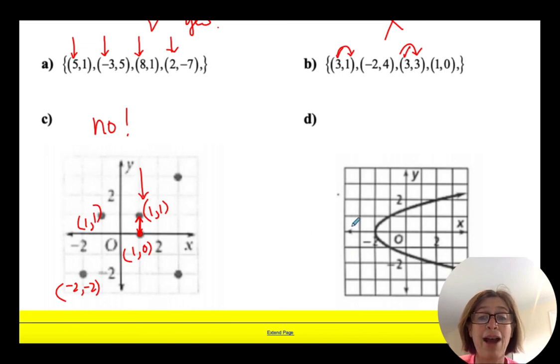And here's a graph, another graph, where I actually connected points. I have a sideways parabola here. We're going to learn about that this year. And I can see that right here at 2, this point is 2, 2. And this point right here is 2, negative 2. So it has repeated x's with different y's. It's not a function.